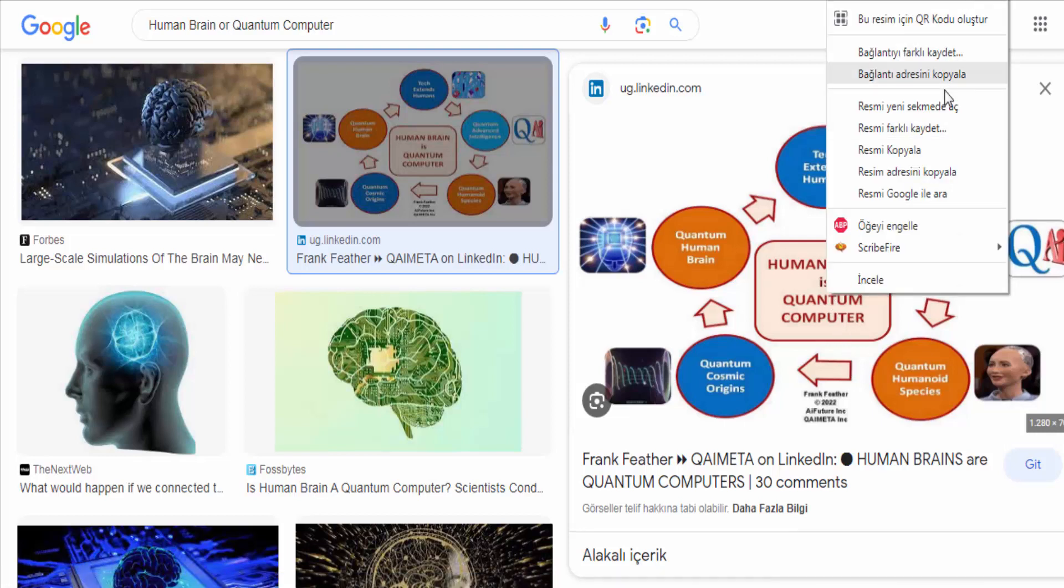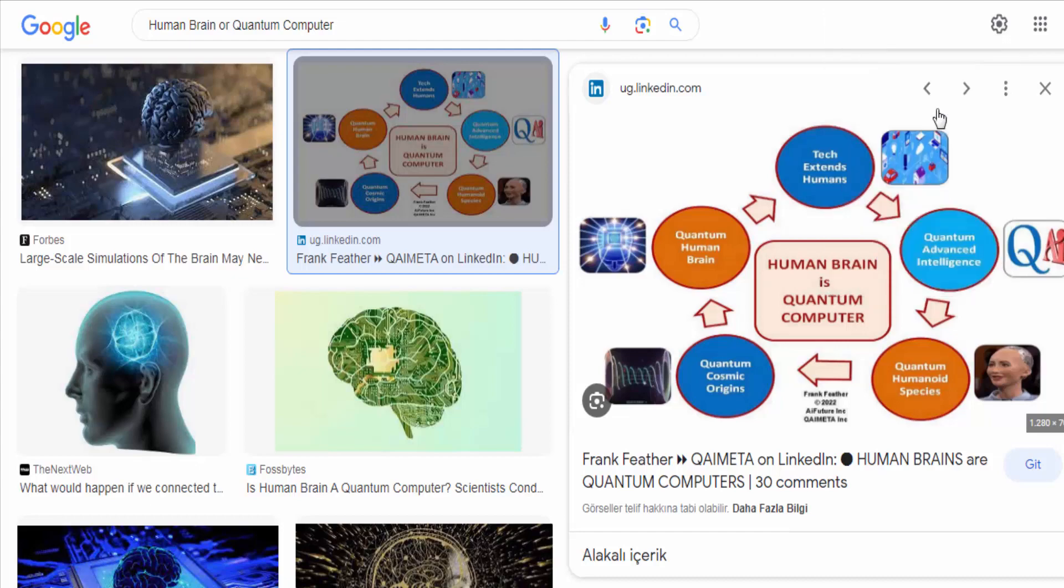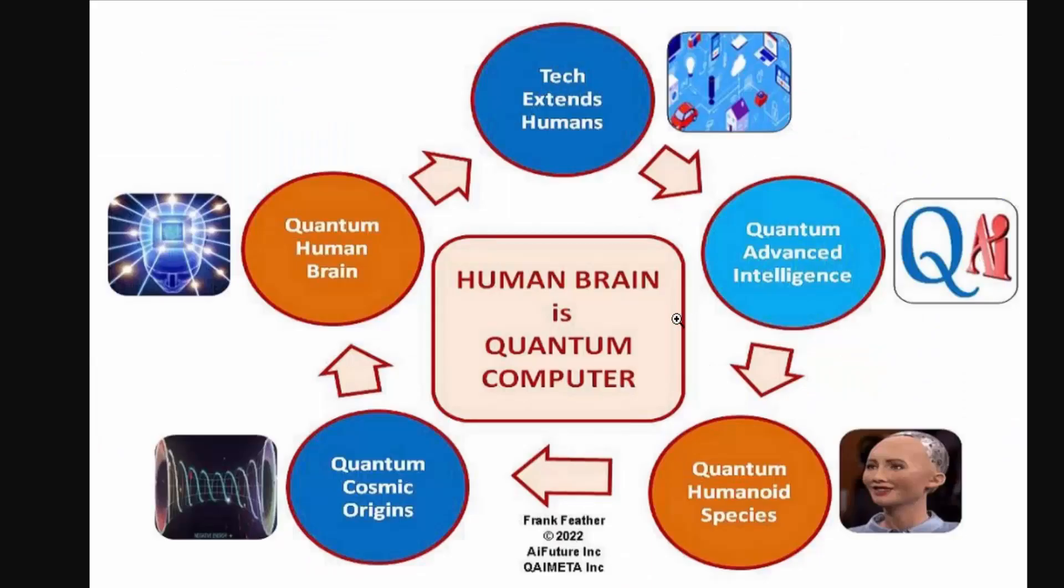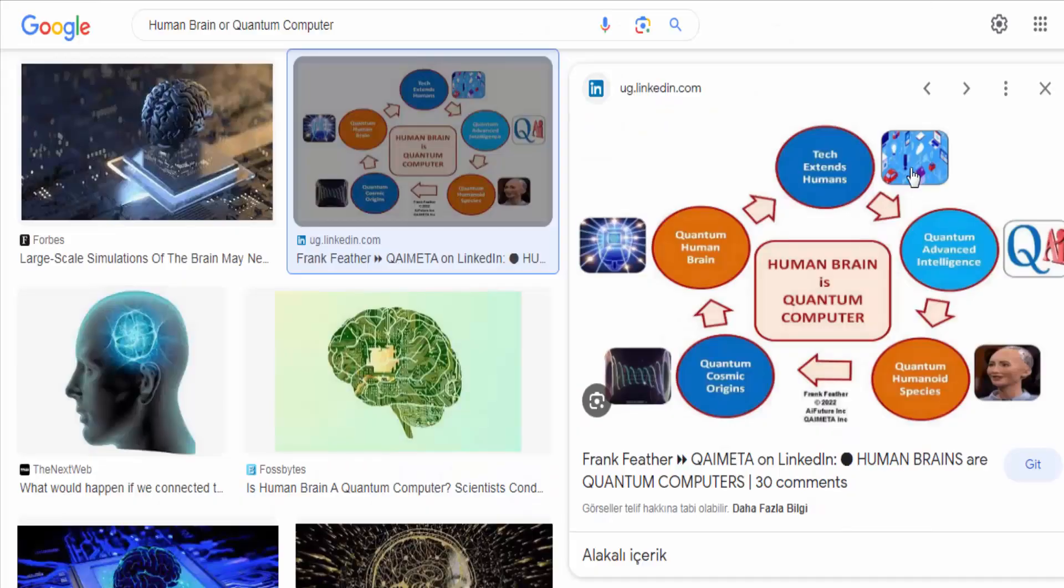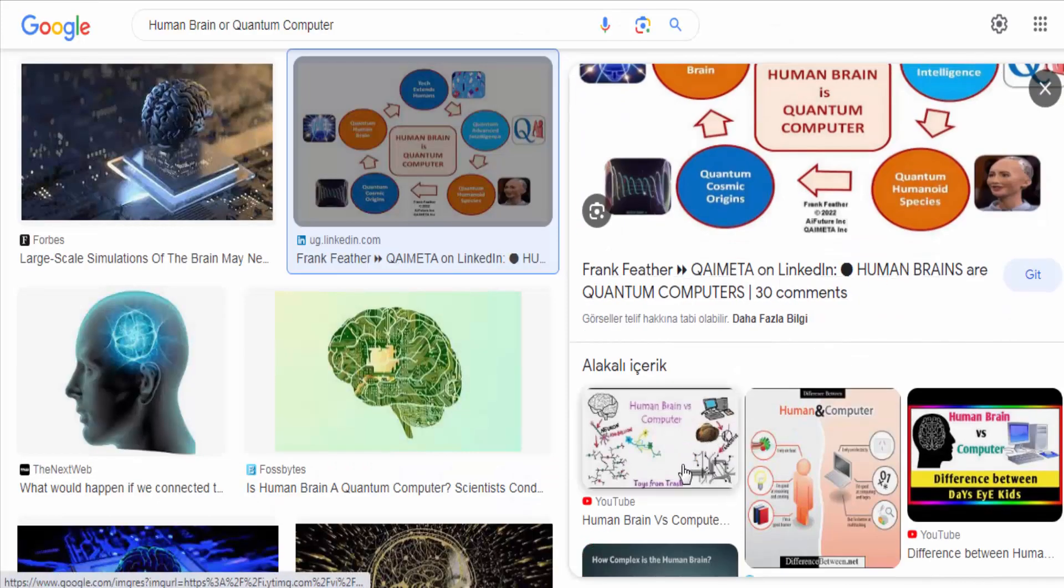The human brain is a highly complex and sophisticated organ that serves as the control center for the nervous system. It is composed of billions of interconnected neurons that work together to process information, store memories, and perform a wide range of cognitive functions.